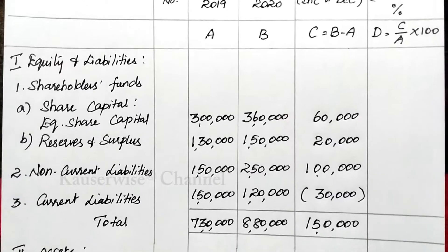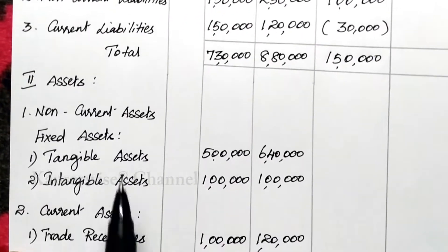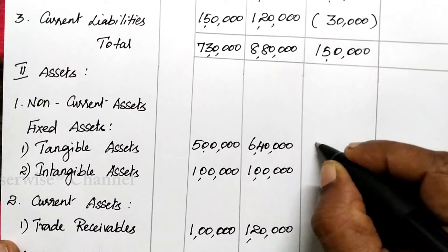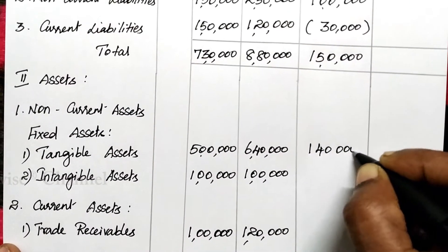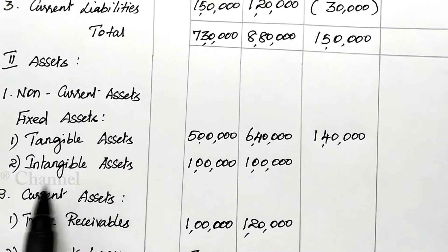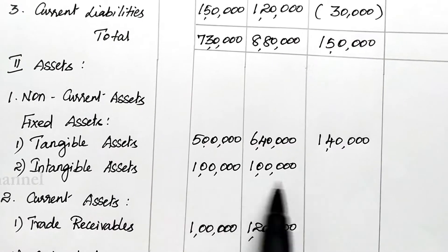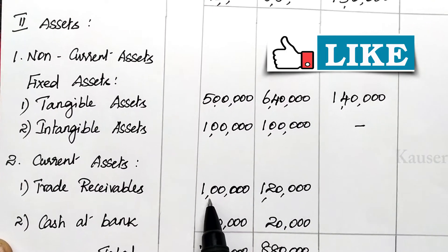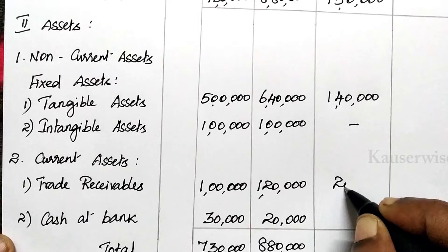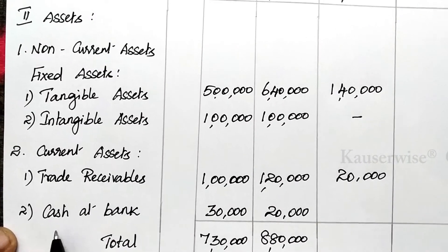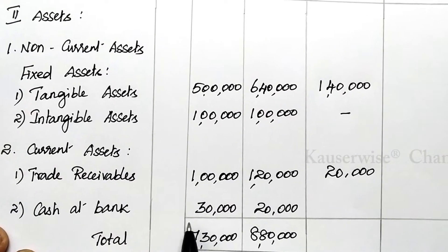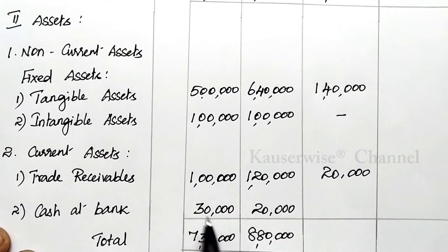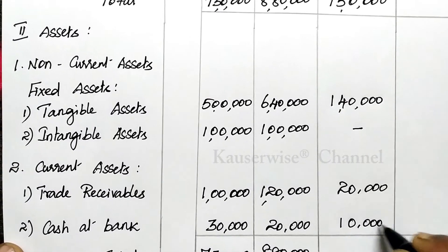In the same way, find the absolute change for assets. Tangible assets: current year 6,40,000, previous year 5,00,000 — 1,40,000 increased. Intangible assets: current year 1,00,000, previous year 1,00,000 — no change, put a dash. Trade receivables: current year 1,20,000, previous year 1,00,000 — 20,000 increased. Cash at bank: current year 20,000, previous year 30,000 — decreased by 10,000, so enter (10,000) within brackets as the current year value is less than the previous year.